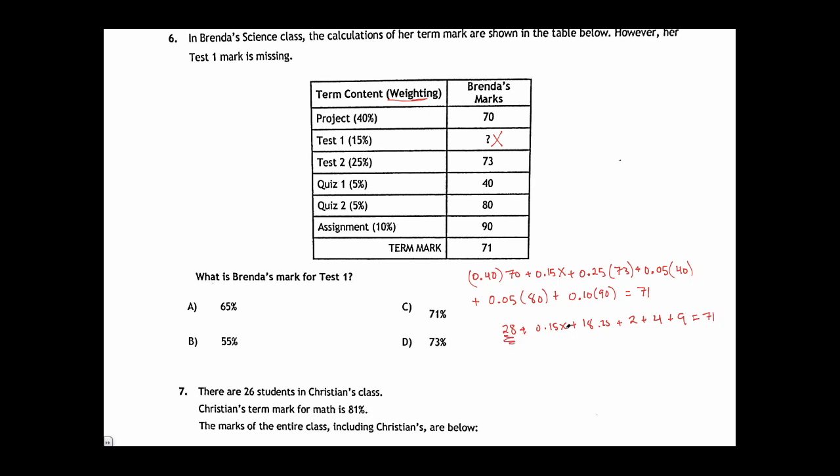Now let's group like terms. All these number terms get added together. The only thing that does not get added is the term containing the x. So I have 0.15x plus all these terms added together will give me 28 plus 18.25 plus 2 plus 4 plus 9 is 61.25. It equals 71. I subtract 61.25 from both sides so that I can cancel it from my left-hand side. This gives me 0.15x equals 9.75.